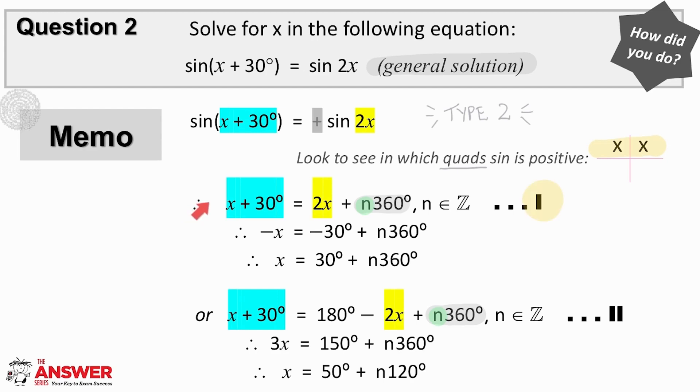So here, for the first quad solution, we have x plus 30 equals 2x plus n360, which simplifies to this equation of x. And then the second quad solution is x plus 30 equals 180 minus 2x plus n360, which simplifies to this equation for x. Remember in each case to add n an element of z.